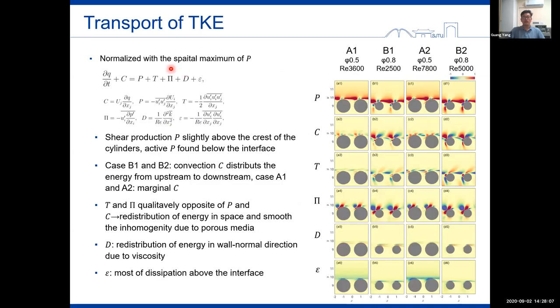The budget of TKE is then analyzed in detail to visualize the turbulence transport. Derived from the momentum equation, the transport equation for the turbulent kinetic energy can be written as the form shown here. And there are different terms. In the figure, the first row is the turbulence production term P, which mainly locates above the cylinder array. For high porosity cases, active P is also found below the interface.